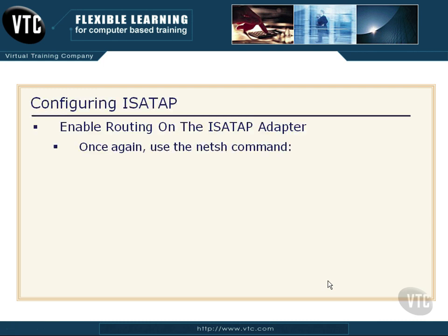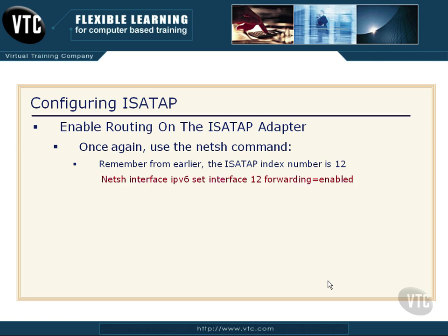Then I need to enable routing on the ISATAP adapter. Once again the netsh command — remember the ISATAP index number is 12. So I'll call net sh interface IPv6 set interface 12, forwarding is enabled.